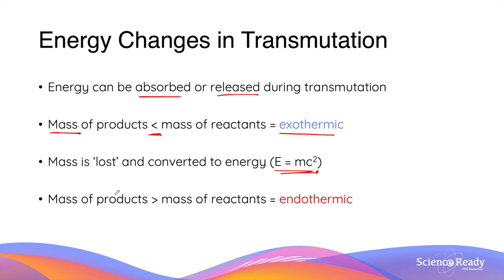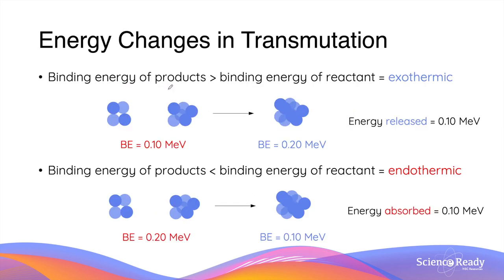Conversely, when the mass of the products is greater than the mass of the reactants, energy is instead absorbed during the transmutation process, and the term for this is endothermic. For any type of transmutation process — whether it's radioactive decay, nuclear fusion, or nuclear fission — the binding energies of reactants and products will always be different. When the binding energy of the products is greater than the reactants, the transmutation is exothermic, meaning it releases energy. In this example, the total binding energies of the reactants is 0.1 MeV.